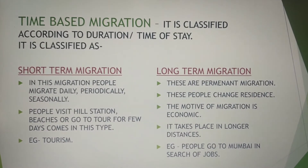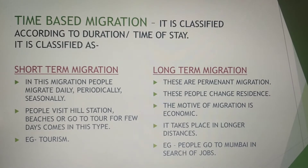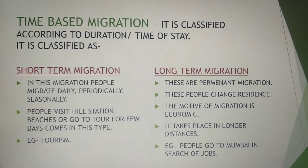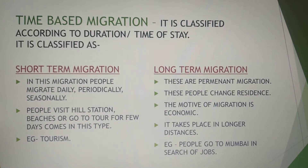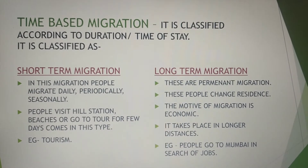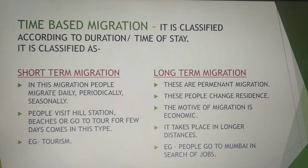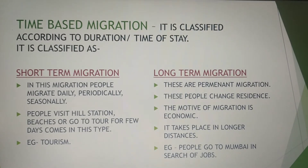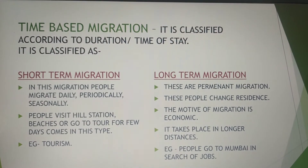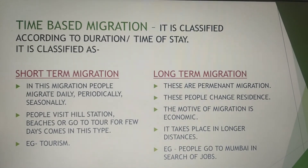Seasonally, you go after a specific interval of time. All these patterns come under short-term migration, meaning you return to your origin in a short time span. Examples include people moving to hill stations, going to beaches, or going on tours for a few days and coming back to their own houses.